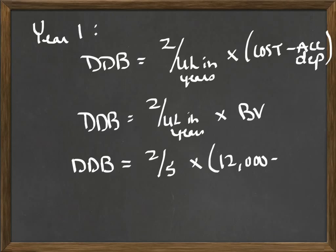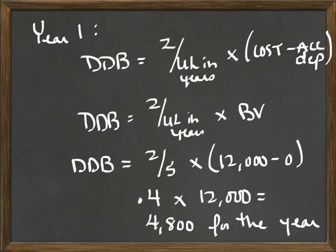First, we do 2 divided by 5, because useful life in years was 5 years. So 2 divided by 5, multiplied by cost minus accumulated depreciation — that's 12,000 minus 0. In the first year of an asset's life, there has been no depreciation, so accumulated depreciation is 0. That gives you 0.4, or 40%, times 12,000, which gives us $4,800 for the year. So in year 1, we get to recognize $4,800 in depreciation.